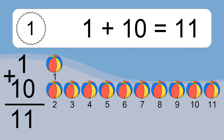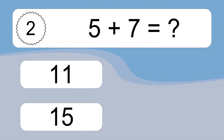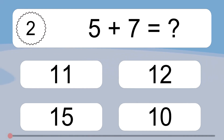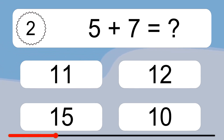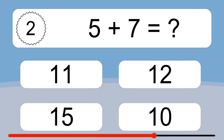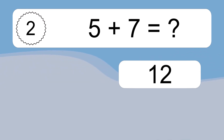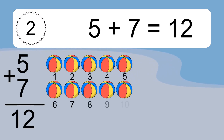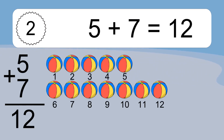5 plus 7 equals what? 5 plus 7 equals 12.